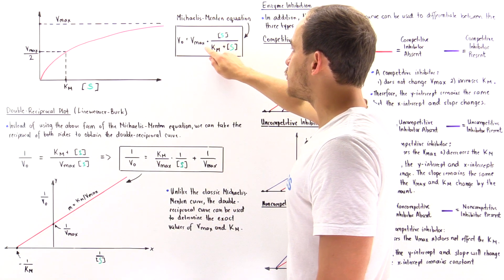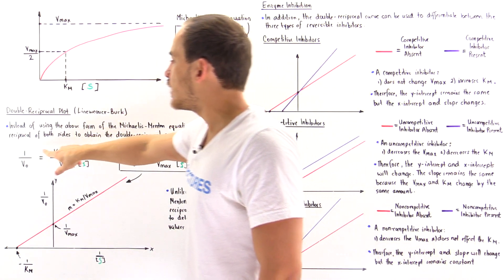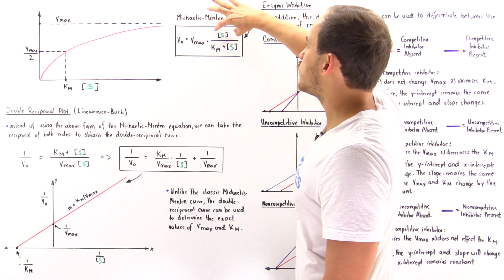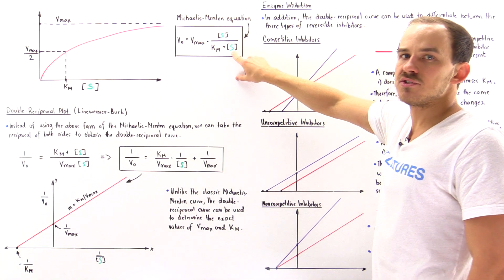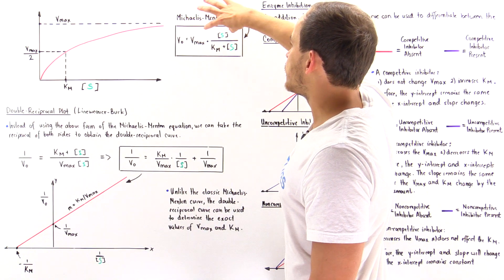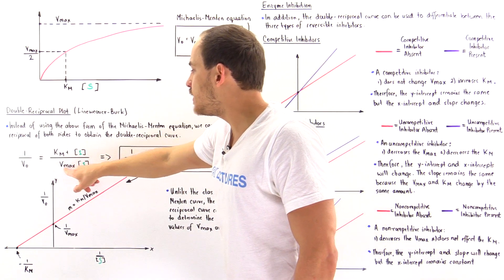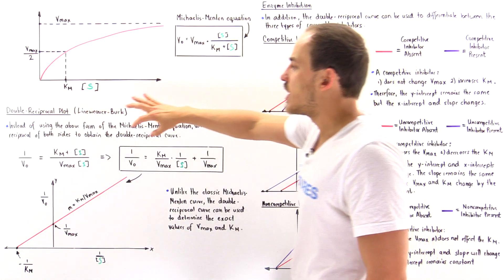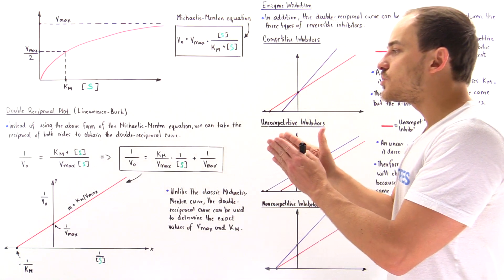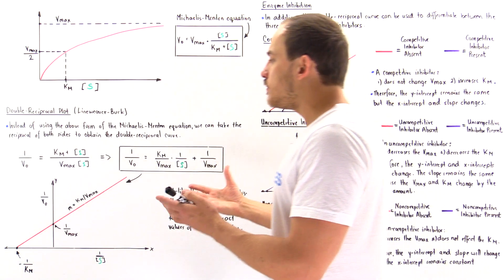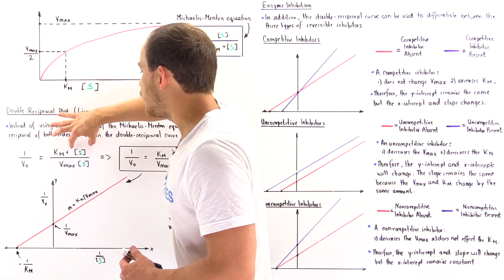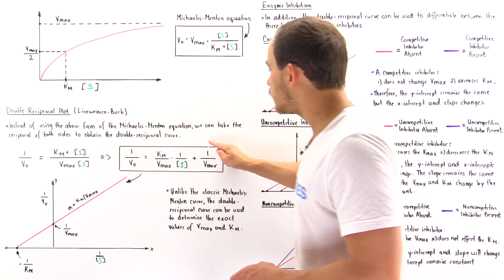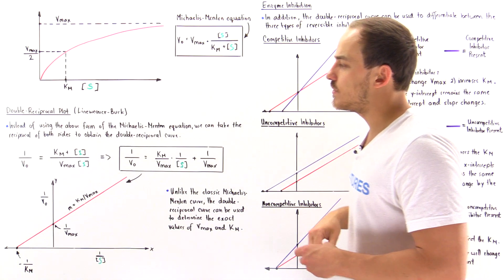If we take the reciprocal of v-naught, we get 1/v₀. Taking the reciprocal of the right side, the top becomes Vmax multiplied by the substrate concentration, and the bottom becomes Km plus the concentration of S. We then rearrange, distributing the denominator to each term, and we get the Lineweaver-Burk equation. Notice that the concentration of S cancels out on the second term on the right side, and this equation has the same exact form as a straight line.